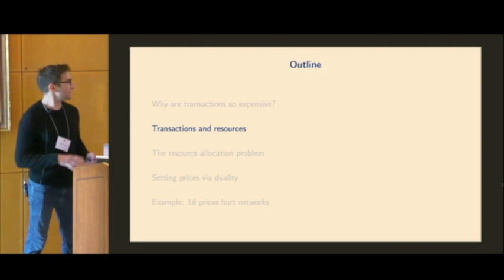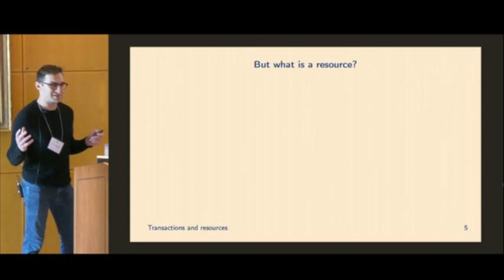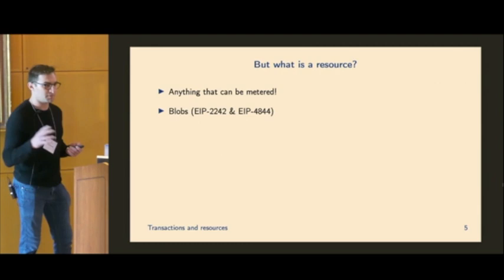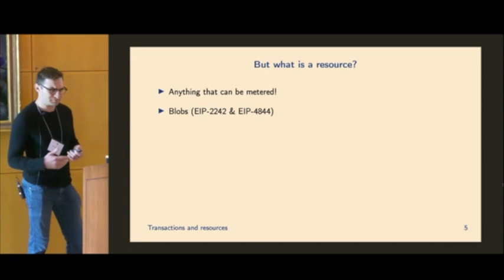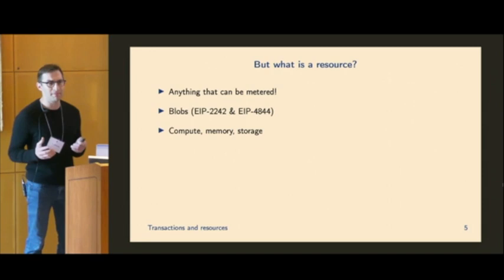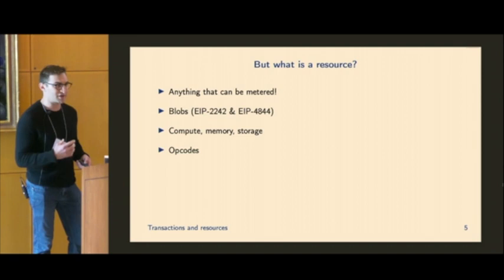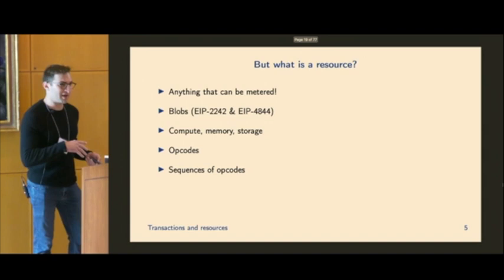So I mentioned transactions resources. Let's define this. We're going to start at a very abstract definition of a resource and just say that's anything that can be metered. So this could be things like blob data. And so we're going towards two dimensional fee markets right now with rollups kind of increasing in usage a lot. It could be like big kind of categories. So anything that's compute, anything that's memory, anything that's storage, anything that's bandwidth.